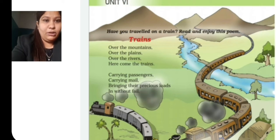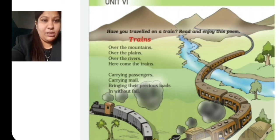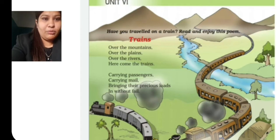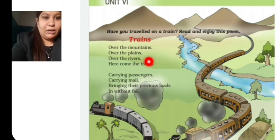Okay, now here, first what the poet is saying is: where do trains come from? They come over the mountains, over the plains. Mountains — you all know — are hills. Plains are areas with flat land and few trees. And rivers you also know. So from all these places, the trains are coming.